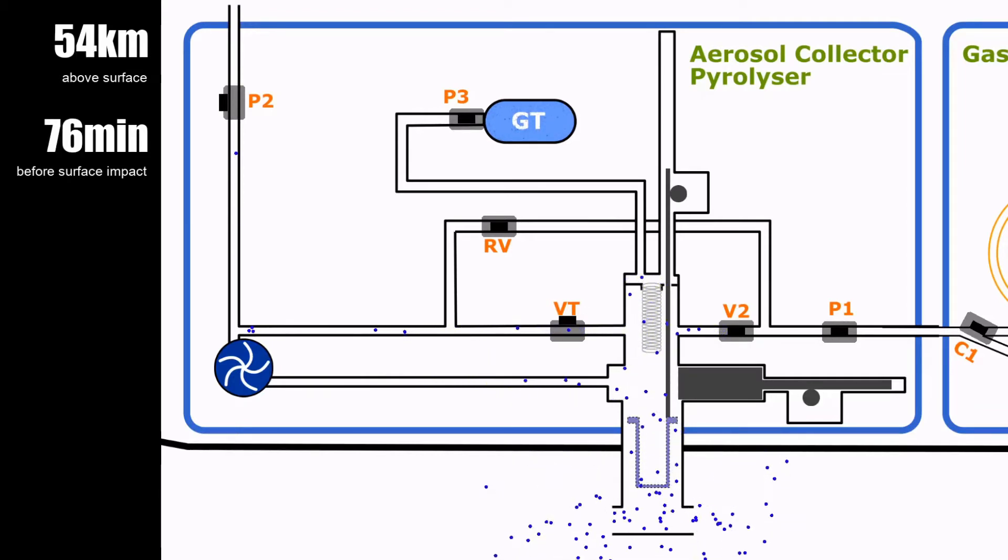In order to maintain a strong airflow through the collection filter during the sampling phase, the pump unit is turned on, forcing air through the collection filter and venting it through the P2 valve back into Titan's atmosphere.